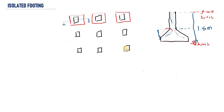In order to prevent that problem, structural designers or geotechnical engineers extend the footing and make it flat. So the footing now has a flat profile, making it very easy for workers to use the vibrator to compact the concrete. We do this for each individual column, and this is what we call isolated footing.